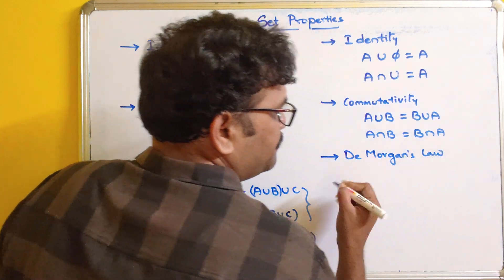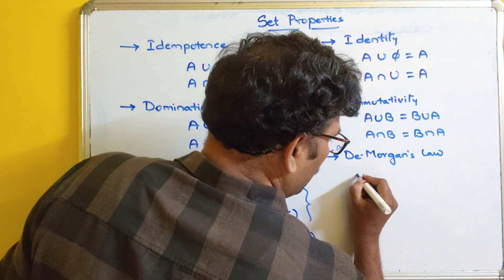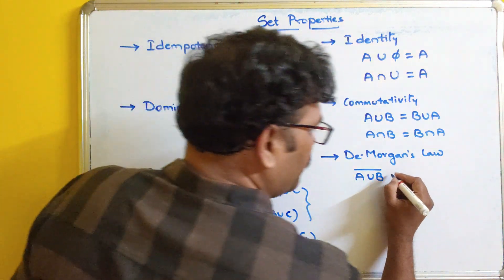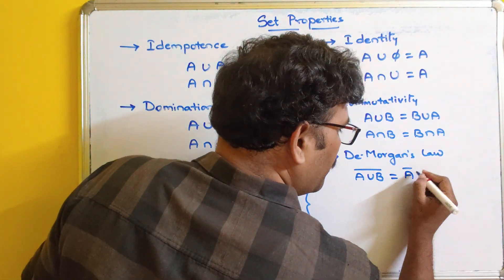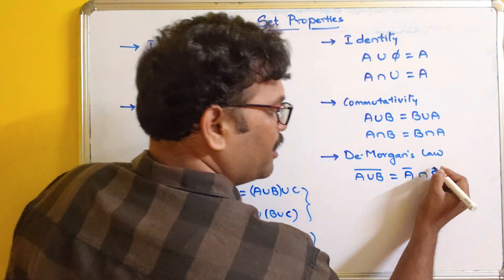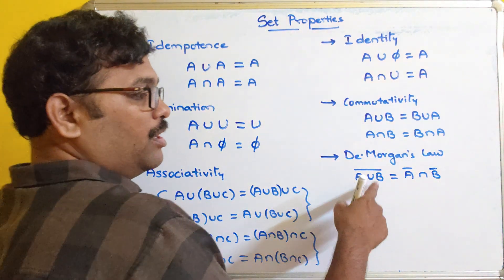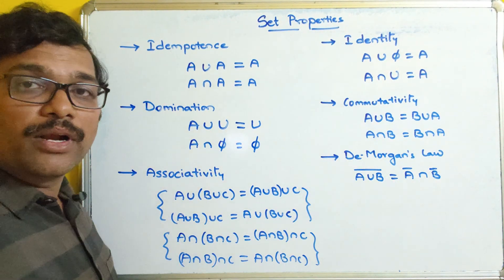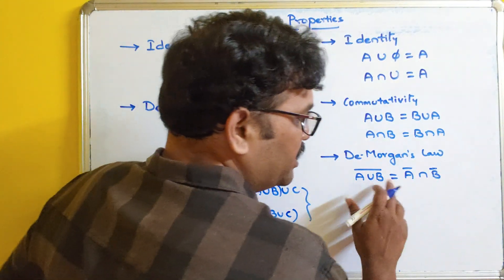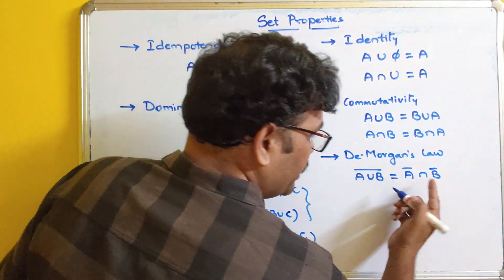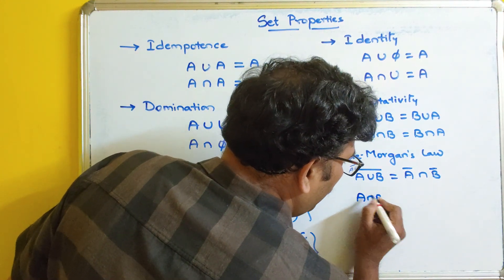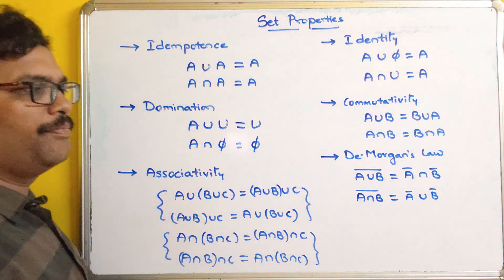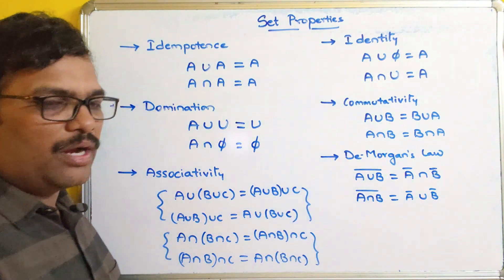Next is De Morgan's law, which we have also studied in mathematical logic. The complement of (A union B) equals A complement intersection B complement. So instead of applying the union and then finding the complement, you can find individual complements and intersect them. Similarly, the complement of (A intersection B) equals A complement union B complement. This is De Morgan's law.